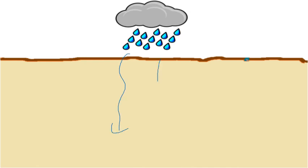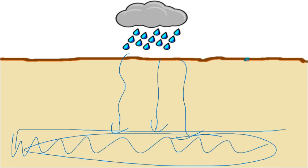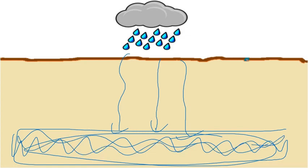Water goes into the ground — but where does it go? It doesn't go all the way to the core of the earth. There gets to be a point where the water can't go any further, and the water starts to stack up. There will be a place down here where the ground is just full of water — it is saturated, just like we use that term with air. It is full of water with no more open space.